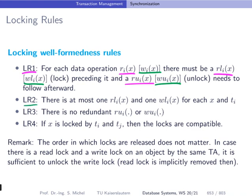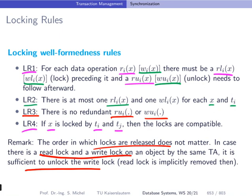Second rule says, there is at most one lock request for read and write for one object and one transaction. So there are no redundant lock requests. Third rule says, there is no redundant unlock. And the fourth rule says, if X is locked by a transaction TI and TJ, then that means that the locks have to be compatible. As the matrices or the tables from the previous slide indicated. The order in which locks are released does not really matter. And we assume that in case you have a read lock and a write lock on the same object, it is sufficient to do the unlock of the write. The read lock is implicitly then removed.